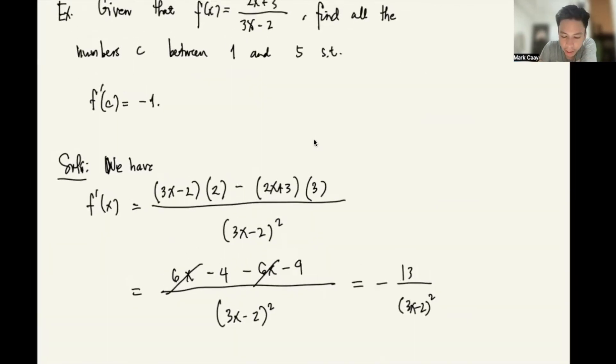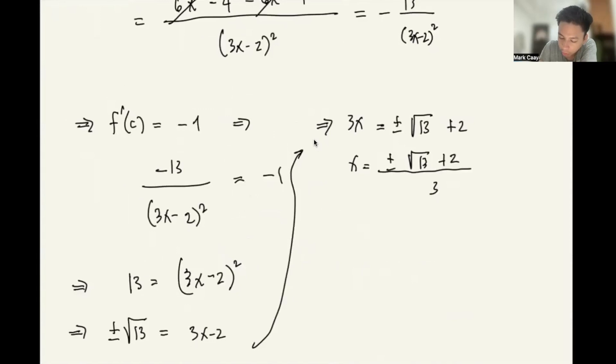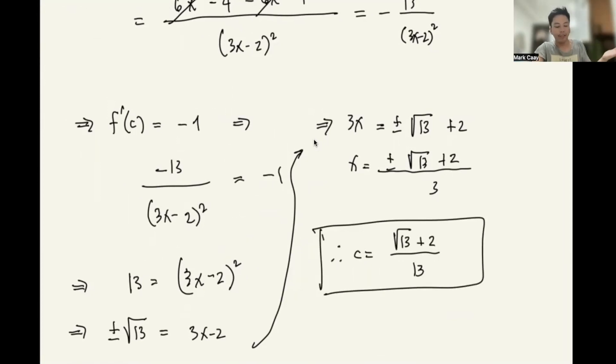We're asked to find the value between 1 and 5. So for 1 and 5, it should be in the closed interval [1,5]. However, the negative square root of 13 plus 2, that doesn't fit. Because I think square root of 13, we know that's more than 3. So plus 2, if it's negative, we're only considering the positive. So therefore, c equals (square root of 13 plus 2) over 3. We won't include the negative because it won't fit in 1 to 5. That's it. If you have any questions or clarification, please let me know.